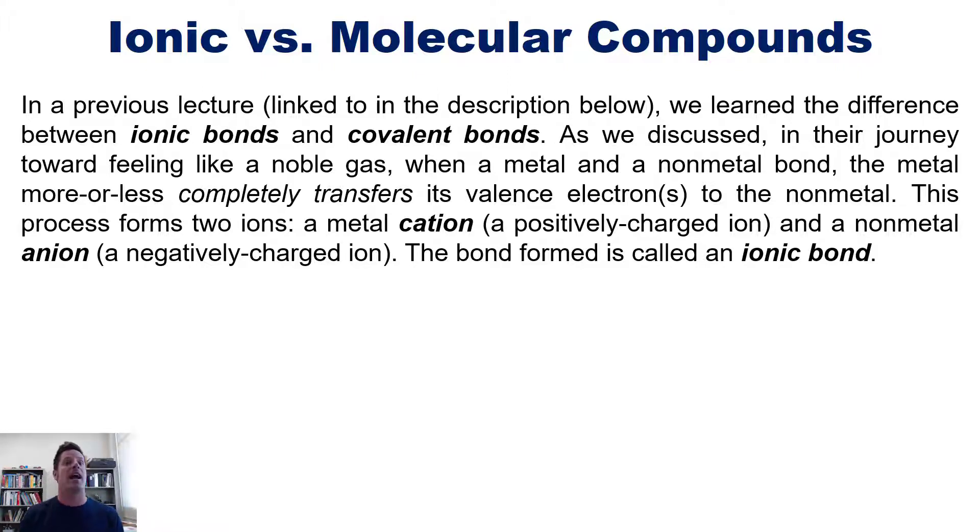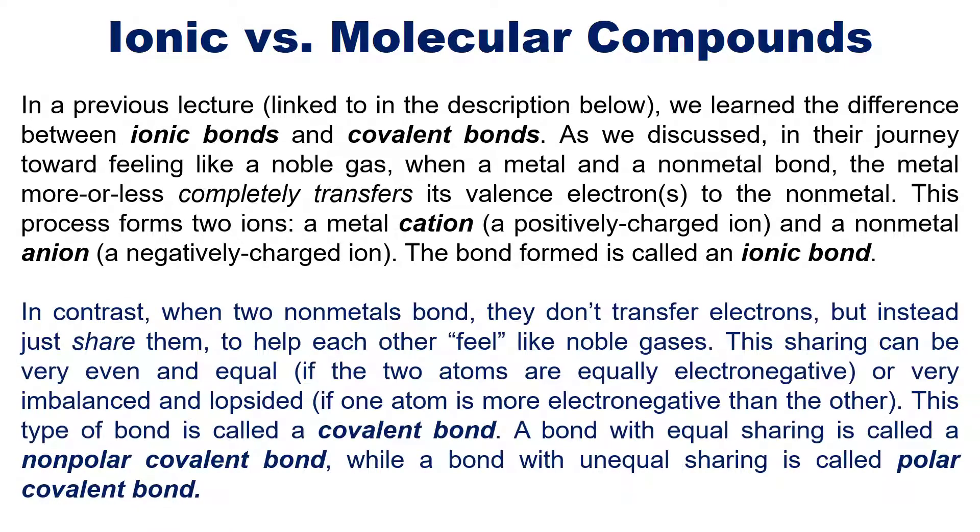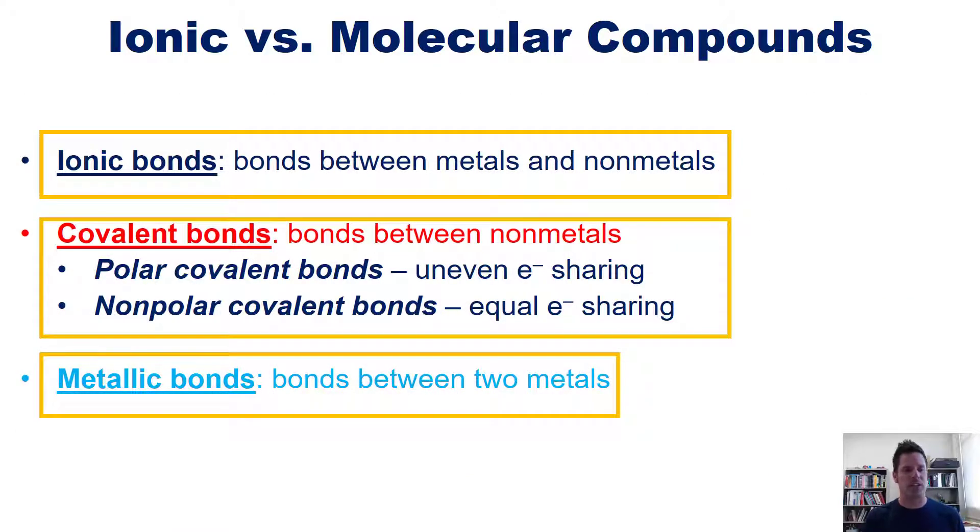In contrast, when two non-metals bond, they don't transfer electrons, but instead just share them to help each other feel like noble gases. This sharing can be very even and equal if the two atoms are equally electronegative, or close thereto, or very imbalanced and lopsided if one atom is more electronegative than the other. This type of bond is called a covalent bond. So, a bond with equal sharing is called a non-polar covalent bond, while a bond with unequal sharing is called a polar covalent bond. This is all summarized clearly in this beautiful diagram here.